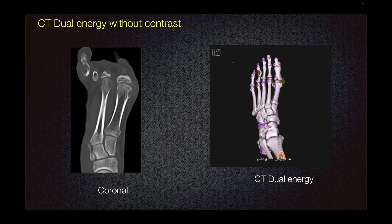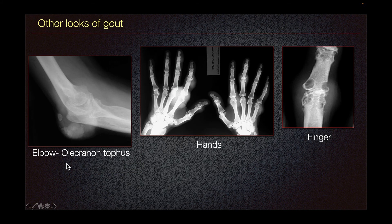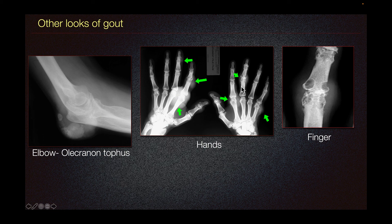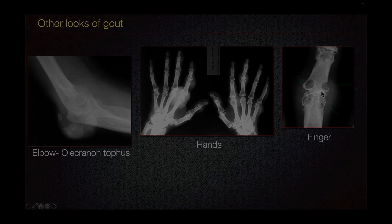Other manifestations of gout — for instance, here in our elbow, we can see the olecranon tophus, likely in the olecranon bursa. In the hand, we have multiple gouty tophi, characterized by this increased soft tissue density in multiple interphalangeal and MTP joints. When we magnify the interphalangeal joints, we can see these typical punched-out erosions along the margin of the joint.